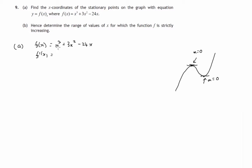So that will be 3x² + 6x - 24. And for stationary points we'll set that gradient formula equal to zero. So we'll need to solve 3x² + 6x - 24 = 0.